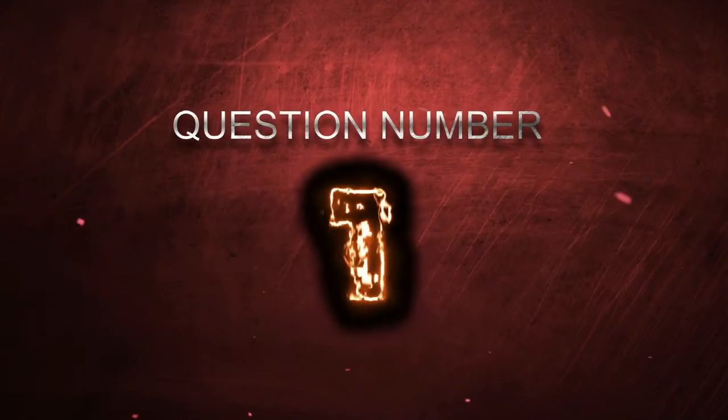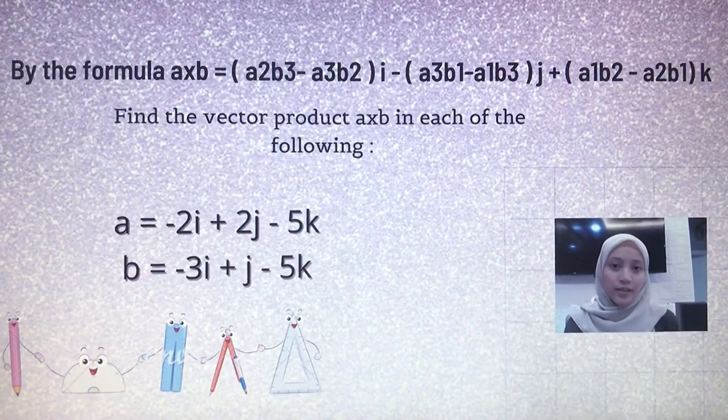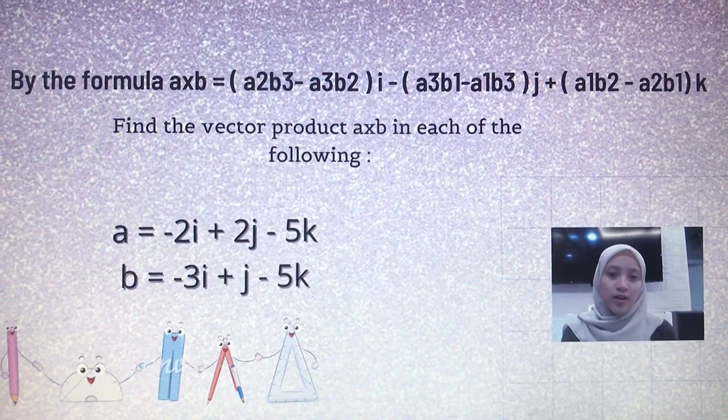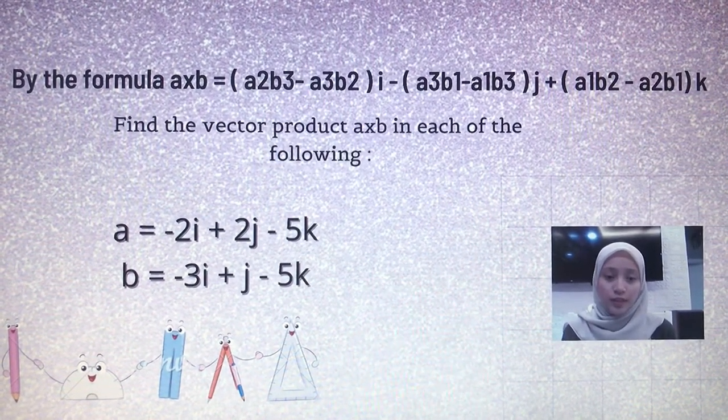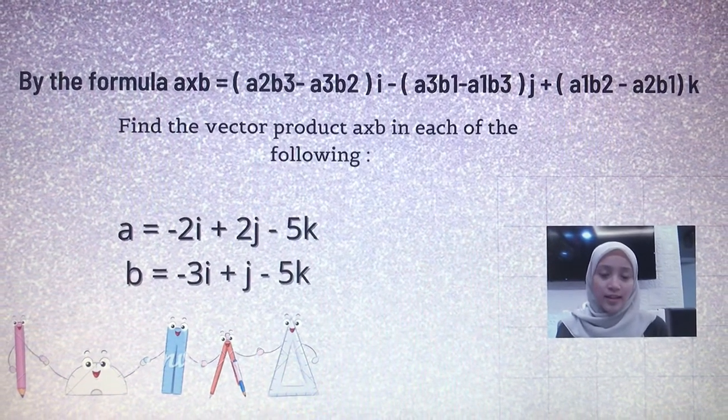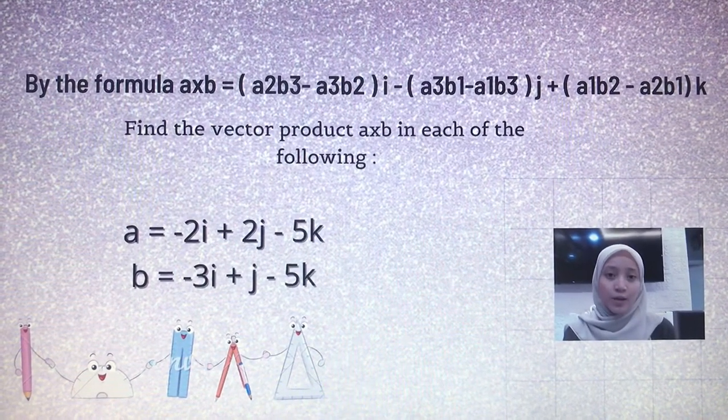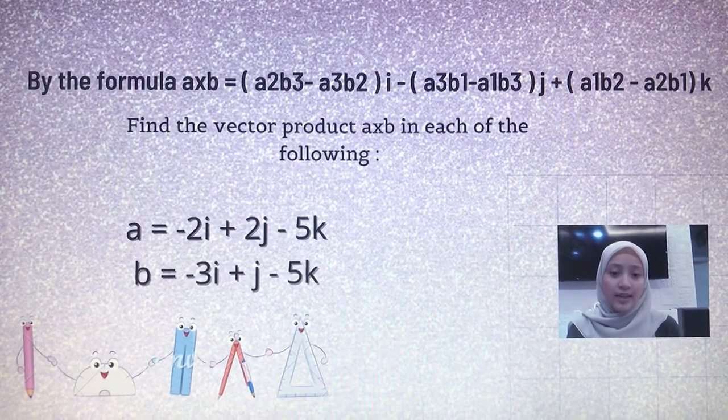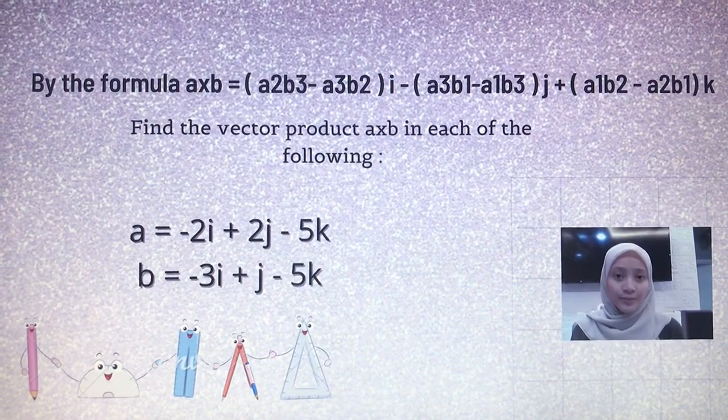Assalamualaikum. Nama saya Nerna Dahmaila binti Ahmad Nizam. Nombor kad matrik 09 BEP20F1031. Soalannya, by the formula A cross B, find the vector product A cross B in each of the following. A sama dengan negatif 2I tambah 2J tolak 5K. B negatif 3I tambah J tolak 5K.